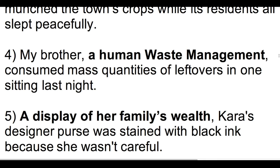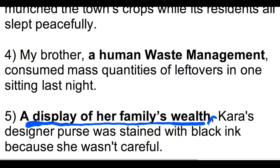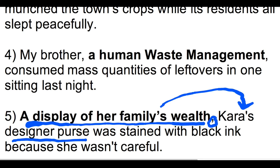Now number five is different — this is the one you may not do, so pay close attention. 'A display of her family's wealth' — in this case, mark the end of the noun appositive with a comma. It's telling you extra information about the designer purse, but unlike the other examples, it comes before the noun. That's why it's a little tricky. It can come before — and you should try it at least once in your paper. It's super cool.